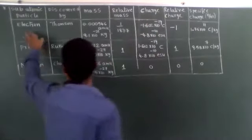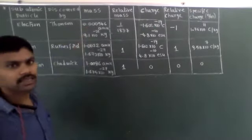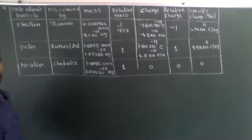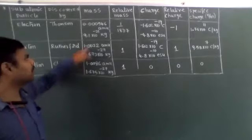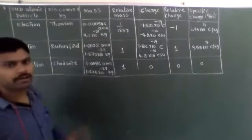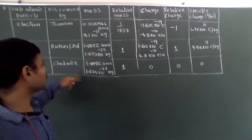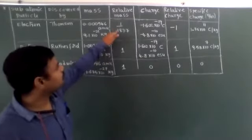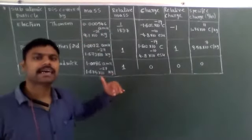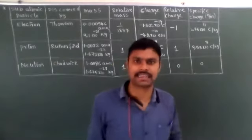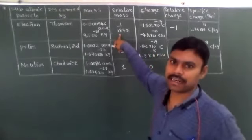Now, electron - discovered by J.J. Thomson. Its absolute mass is equal to 0.00546 AMU, which is 9.1 × 10⁻³¹ kg. Its relative mass compared with proton or neutron is 1/1837 times - it is 1837 times less than a proton.